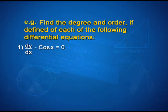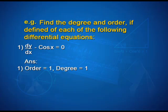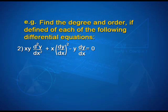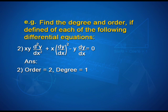Let us check the solutions to the problems given for the home assignment. Question number 1: dy/dx minus cos x is equal to 0. Here, the order is 1 and degree is also 1. For the second: xy·(d²y/dx²) + x·(dy/dx)² minus y·(dy/dx) is equal to 0. In this case, the order is 2 and the degree is 1.